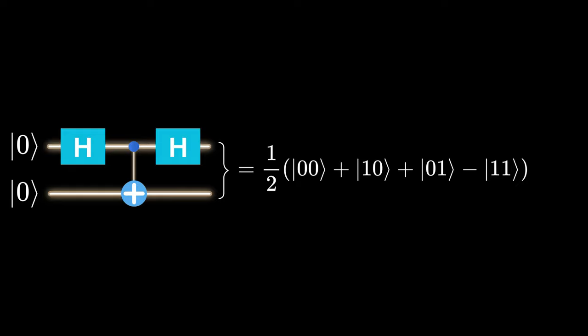The outcome is now a superposition of all possible outcomes. Yes, you heard it right, all possibilities are embraced at once. Instead of one definite state, we now have a dazzling array of potential outcomes.